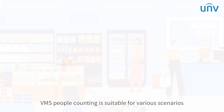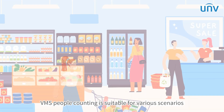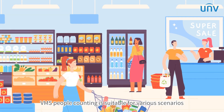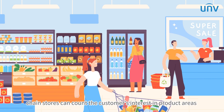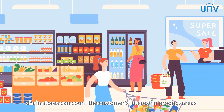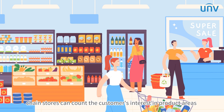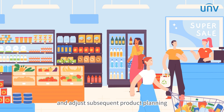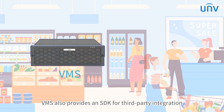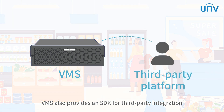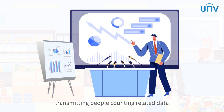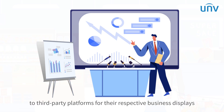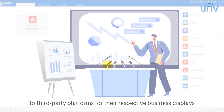VMS people counting is suitable for various scenarios. For example, chain stores can count customers' interest in product areas and adjust subsequent product planning. VMS also provides an SDK for third-party integration, transmitting people counting related data to third-party platforms for their respective business display.